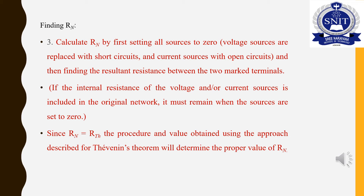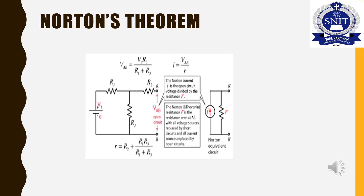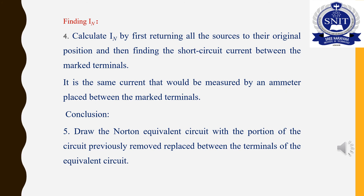Since Norton's Resistance is equal to Thevenin's resistance, the procedure described for Thevenin's theorem will determine the proper value of Norton's resistance. We consider Thevenin's resistance as VOC divided by ISC, and also by considering equivalent resistance across the open terminals by short-circuiting voltage and open-circuiting current sources. Norton's resistance and Thevenin's resistance are equivalent. We find Norton's current by finding the short circuit current across the terminal, returning all sources to their original position.